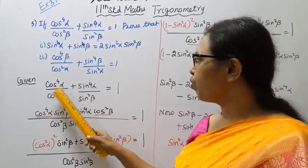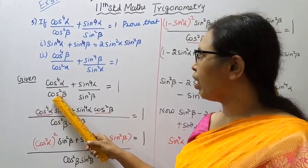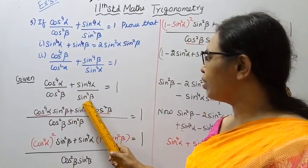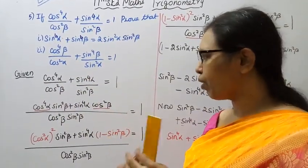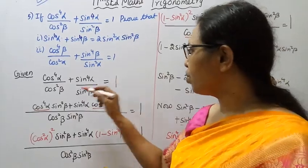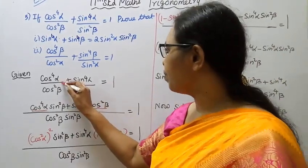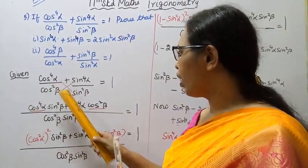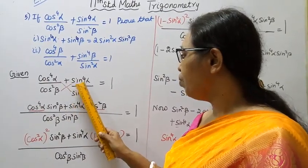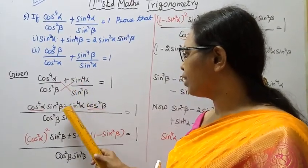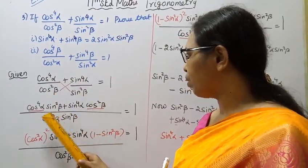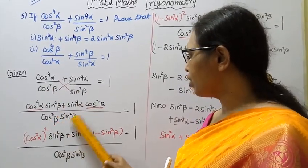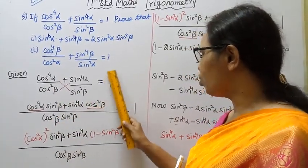Given: cos power 4 alpha by cos square beta plus sin power 4 alpha by sin square beta equal to 1. So, cos power 4 alpha into sin square beta plus sin power 4 alpha into cos square beta, divided by cos square beta into sin square beta, equal to 1.